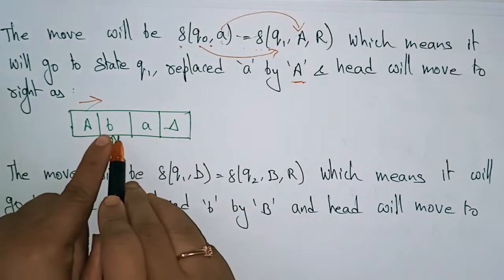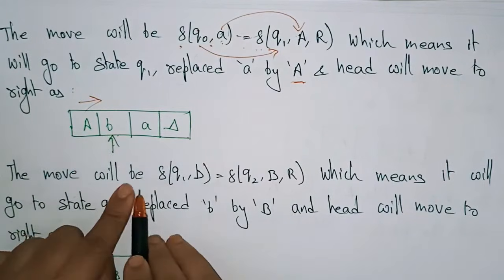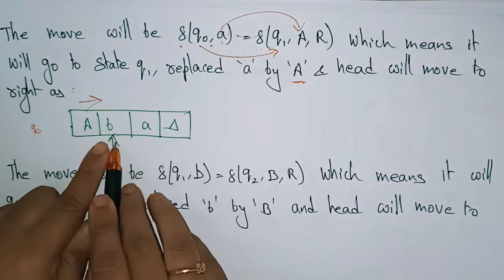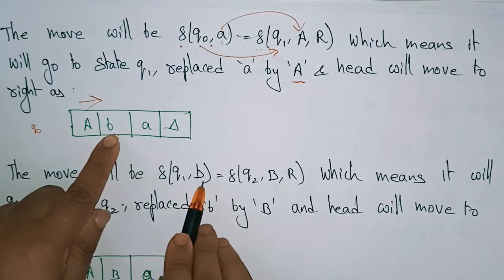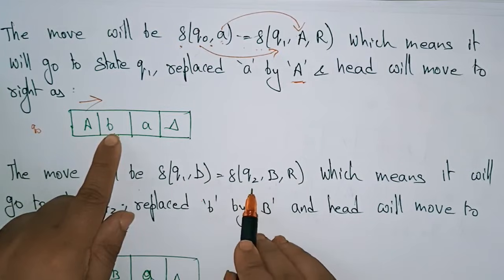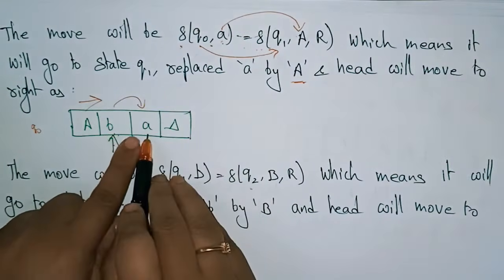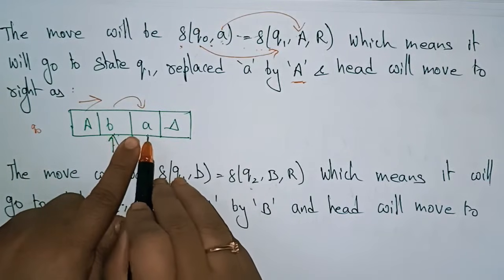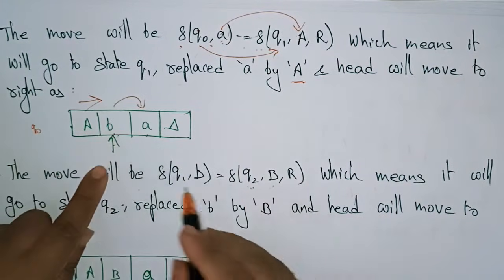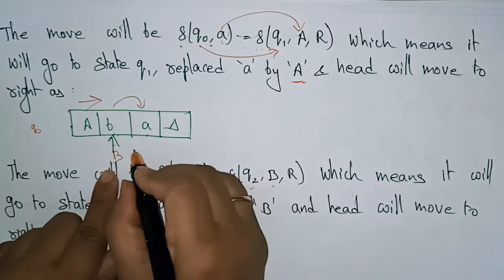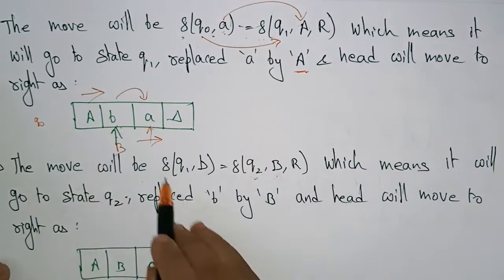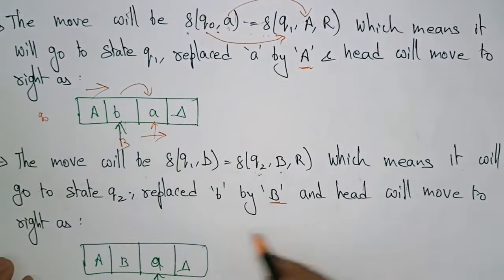Now I write the transition function for B. The current state is Q1. So delta(Q1, B): the state is changing again because the next input symbol is A. The state changes to Q2, small B is replaced with capital B, and we move towards the right. So the head moves right to the next position.